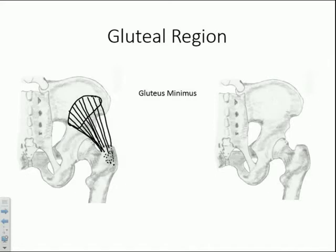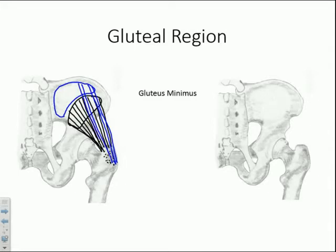Gluteus medius is more superficial to the gluteus minimus. Once again, it originates off the external surface of the ilium, but this time between the anterior and posterior gluteal lines, so it originates more medially. It attaches to the lateral surface of the greater trochanter, also along the posterior surface, so we don't need a dotted line — it goes straight to the back.